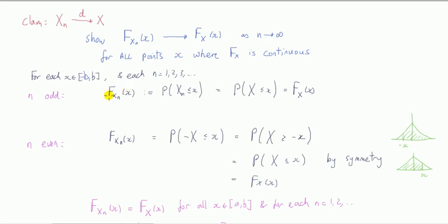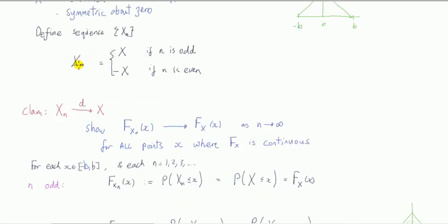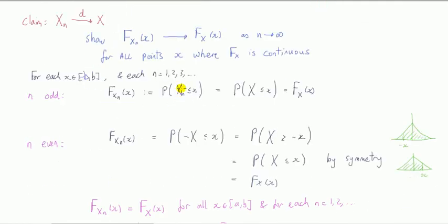Consider that n is odd. Well, if n is odd, the CDF of the sequence computed at the point little x by definition, X_n from the way we've set it up is equal to the random variable X. So finding the probability of this is the same as probability of this, which is just another way of writing the CDF of X computed at the point little x.